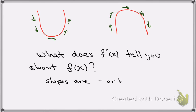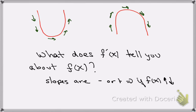What would knowing whether or not the slopes were negative or positive tell you about the function? If the function is increasing or decreasing. So this will tell me if f of x is increasing or decreasing. As an offshoot, the derivative would also tell you where the critical values are.